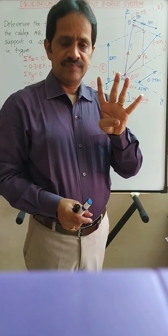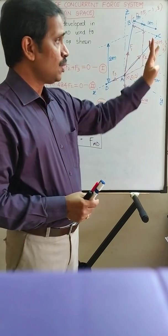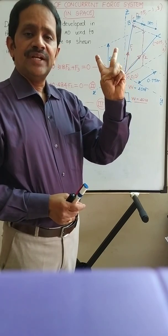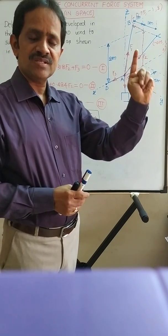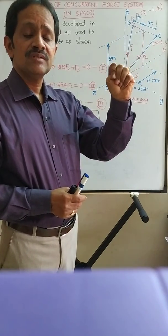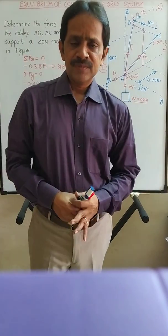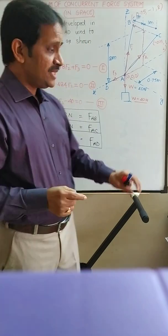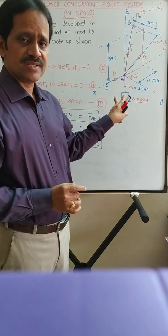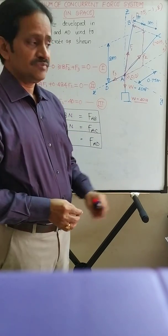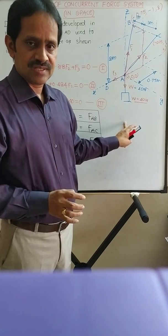There are basically four steps in solving the equilibrium of a concurrent force system. Step 1: write down the position coordinates. Step 2: write down the force vectors of all forces. Step 3: write down the equilibrium equations — ΣFx = 0, ΣFy = 0, ΣFz = 0. Step 4: solve the equilibrium equations to find out the answers. Please do the calculations — just watching the video will not help. Engineering mechanics requires a lot of practice. Please do the calculations. Thank you.